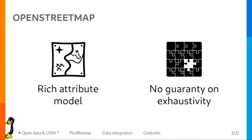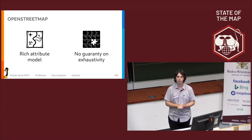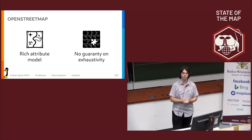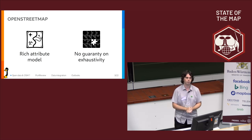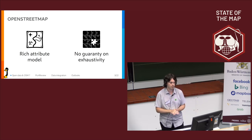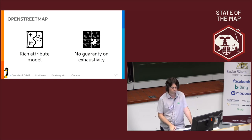As a contrast, in OpenStreetMap we have a very rich attribute model, and most of the time the points of interest and highways are very detailed. But there is no guarantee on exhaustivity. Even if most of the time the mapping is quite exhaustive, nobody can say the map is complete. It's an open source project made by people contributing on their free time, so we have no guarantee the data is complete.